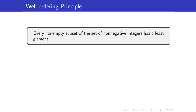The well-ordering principle states that every non-empty subset of the set of non-negative integers has a least element. This is an axiom, so therefore it does not require any proof. It is already accepted to be true.